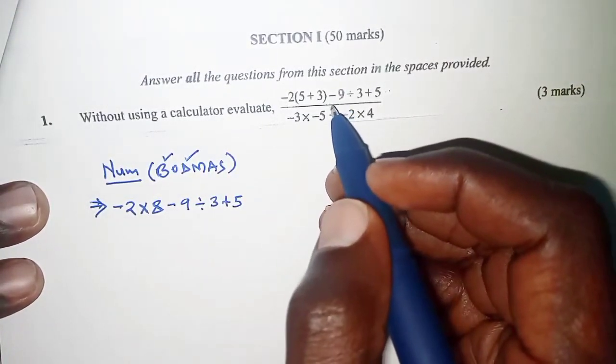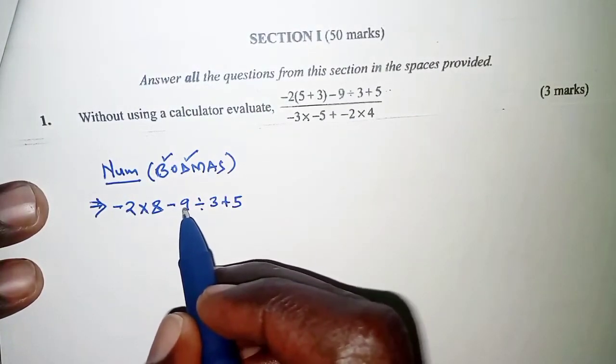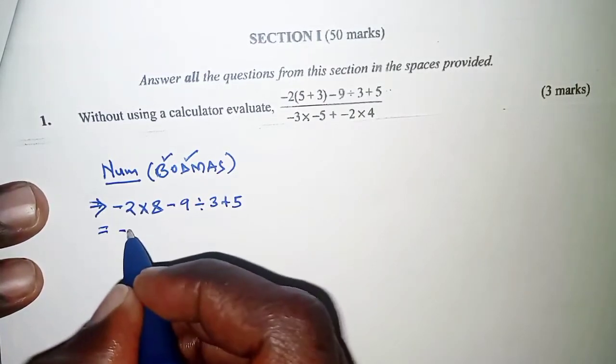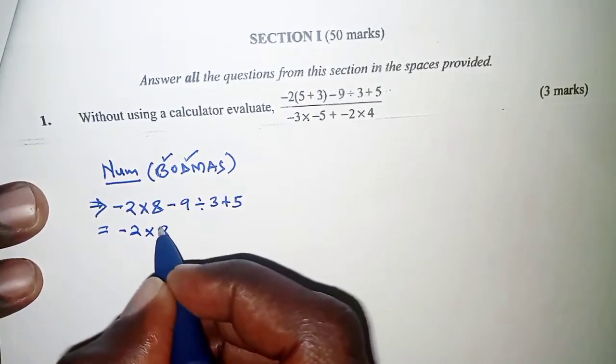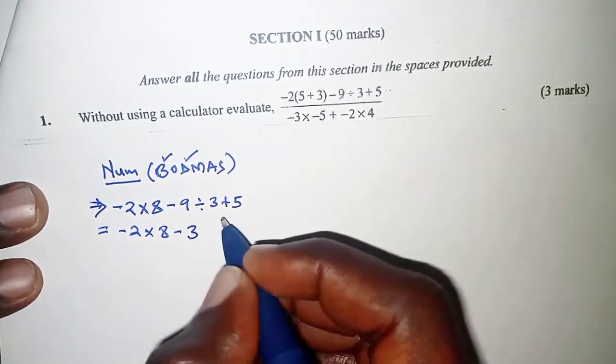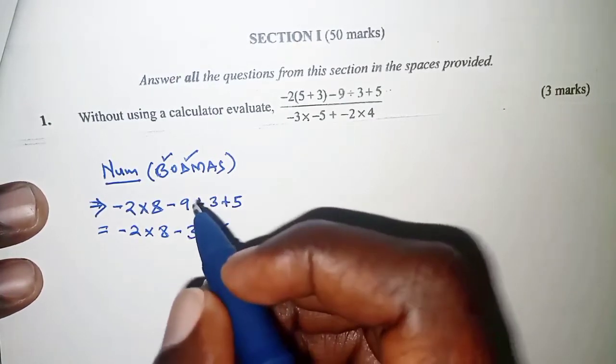For division, we are going to divide negative 9 by 3. In the next step, that is what we do. Negative 2 times 8, and then negative 9 divided by 3, that is negative 3. And then finally we add 5.